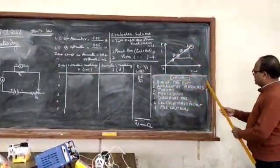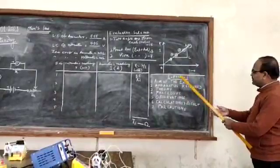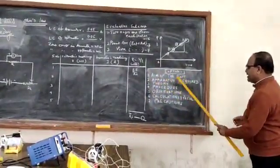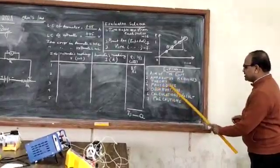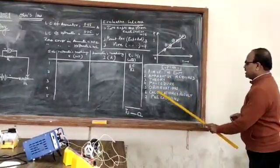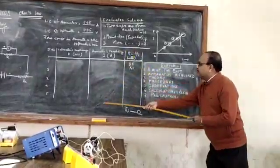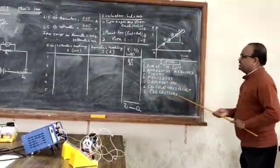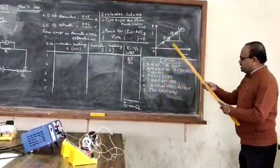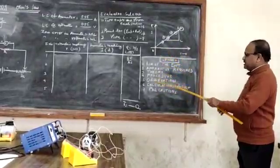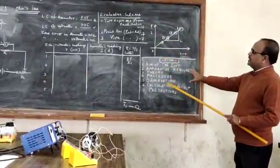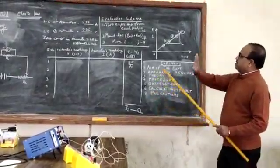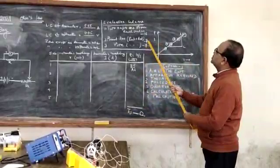I think all of you must know how to write down the experiment. The important steps are: aim of the experiment, apparatus required, theory, procedure, observations in tabular form — these are the headings under which you will write down the practical notebook. I am going to demonstrate the experiment, but before that let me tell you one more thing.